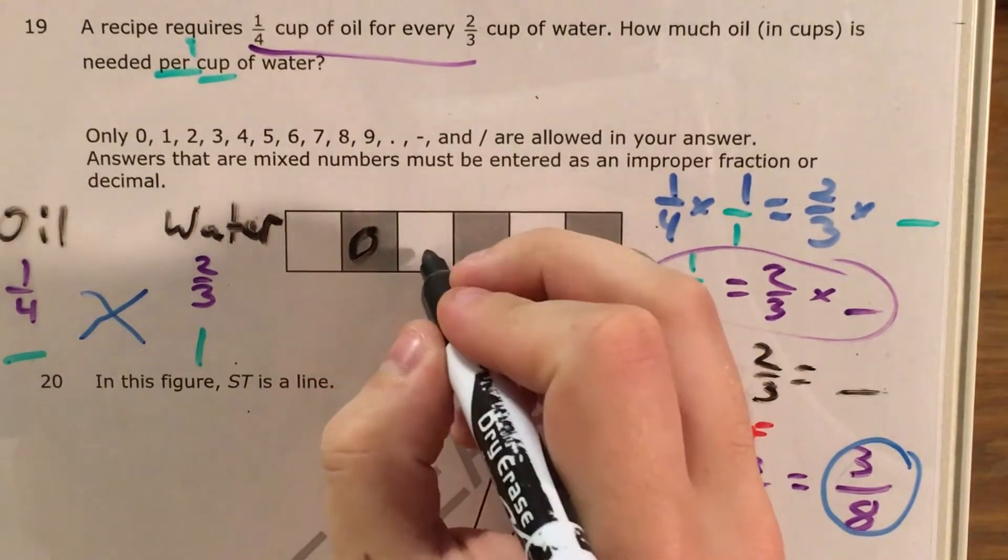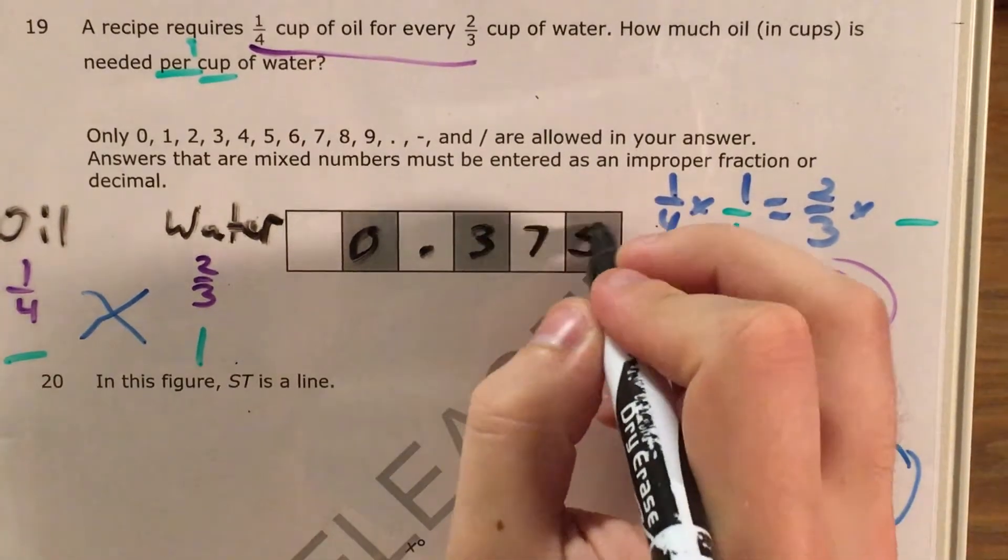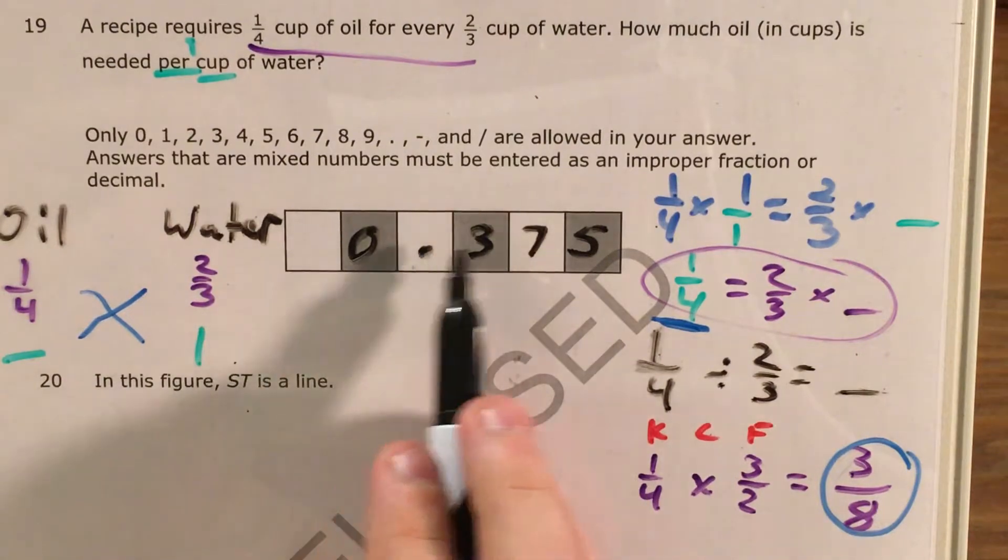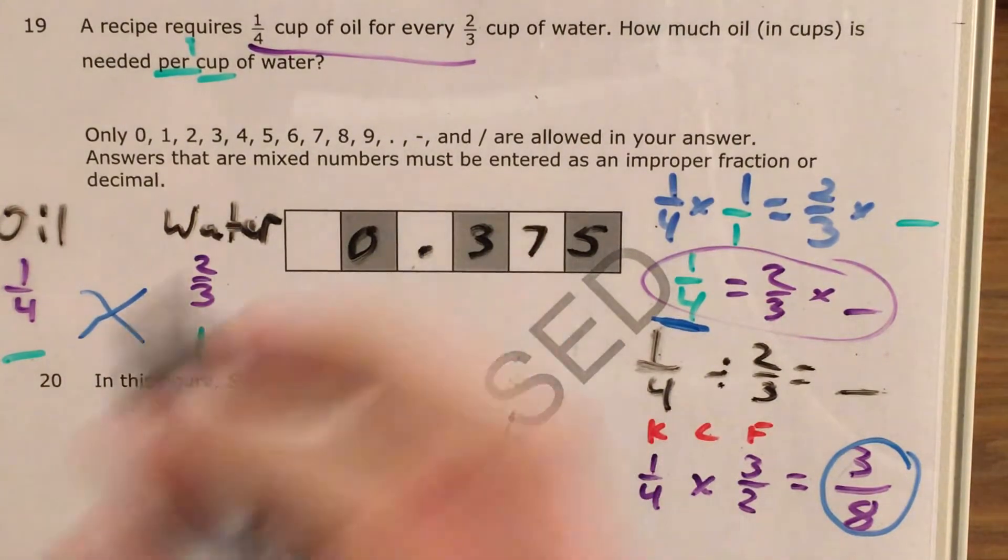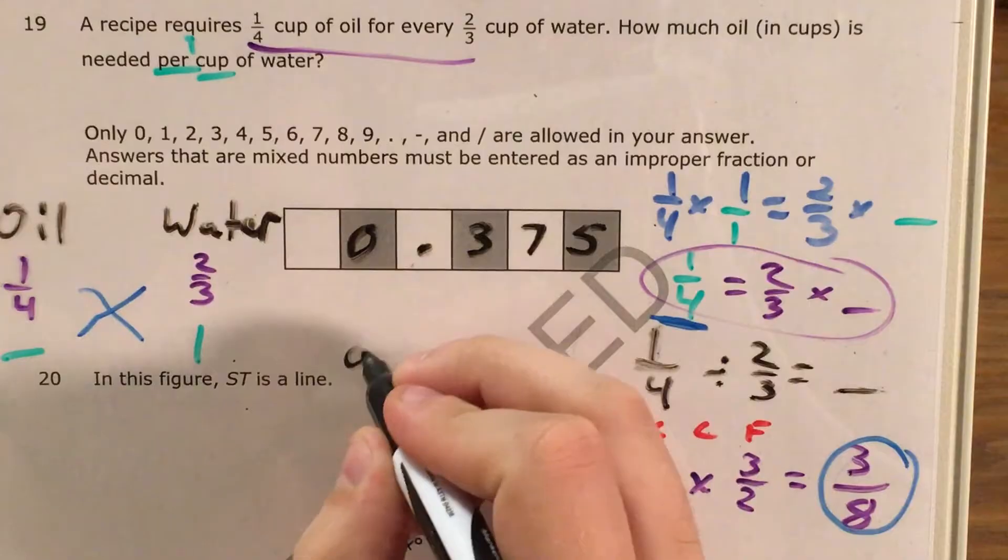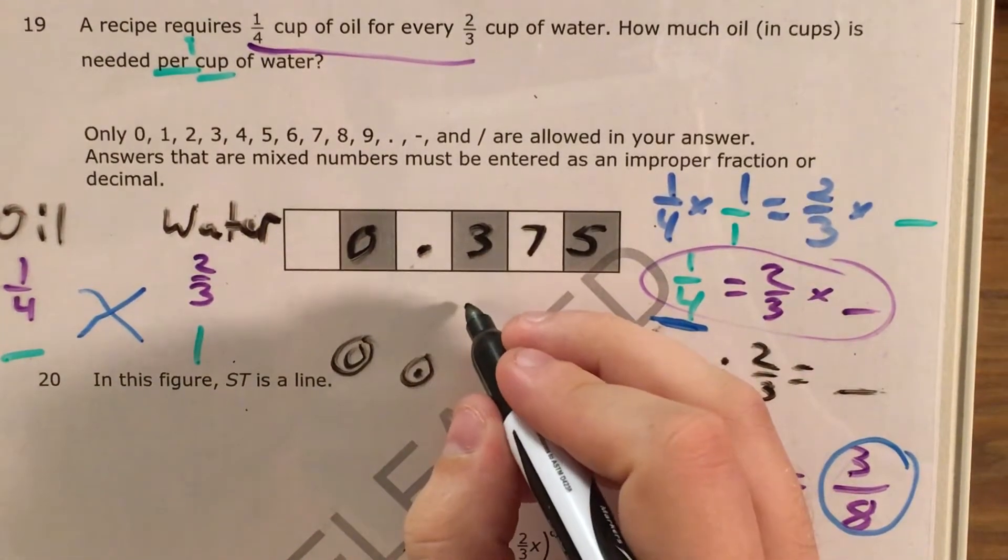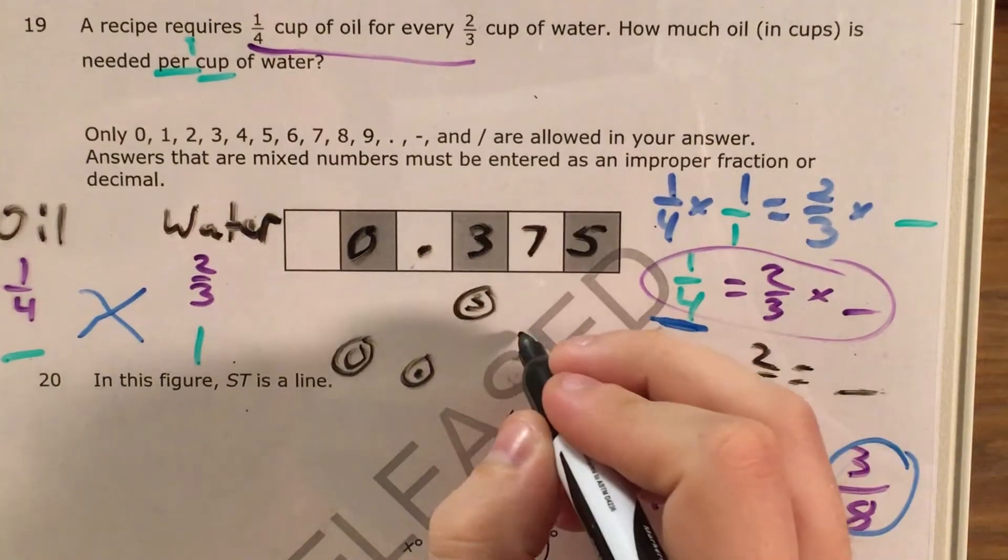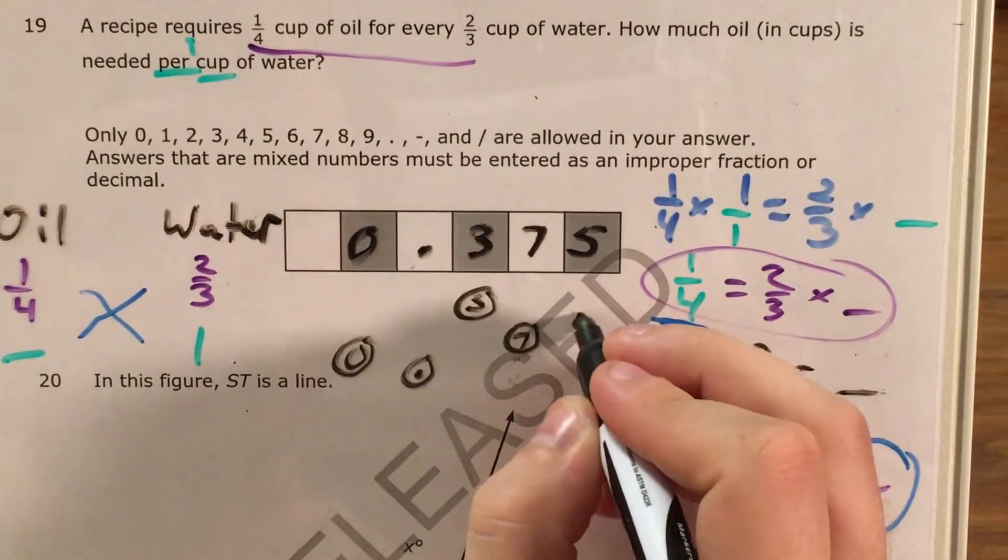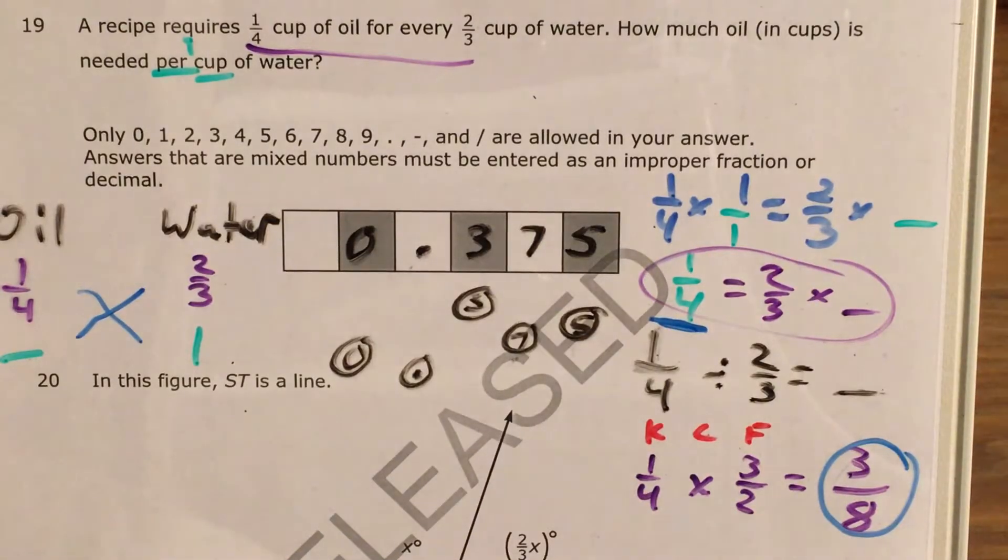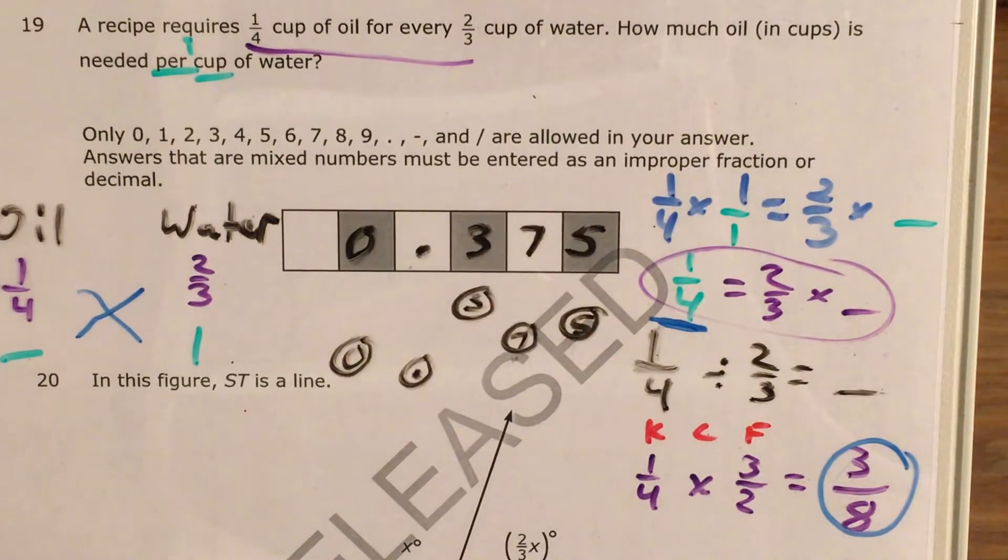I'm not 100% sure, but just to be safe, I'm going to call this 0.375 or 0 and 375 thousandths. And once again, I find my zero bubble, find my decimal point bubble, find my three bubble, find my seven bubble, and find my five bubble. So those are two ways that we can write our answer, the fraction form and the decimal form.